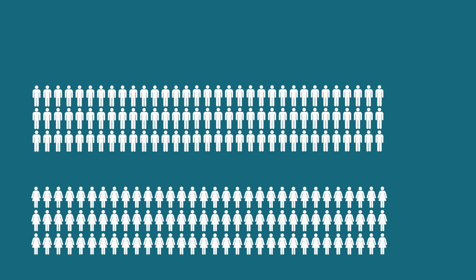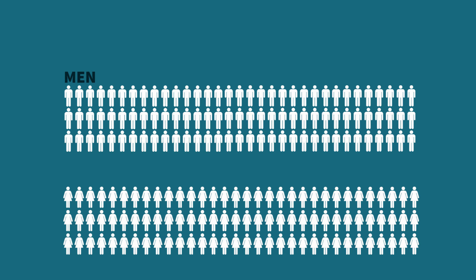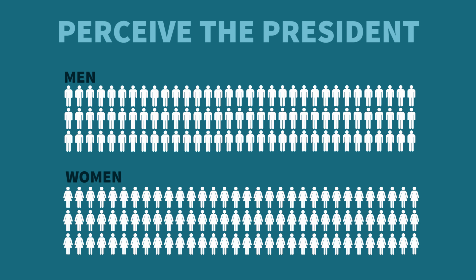Suppose we have a survey of 200 people: 100 people are men and 100 people are women. We want to know how genders differ by how they perceive the president. A cross tab would provide a summary of the distributions of both variables.